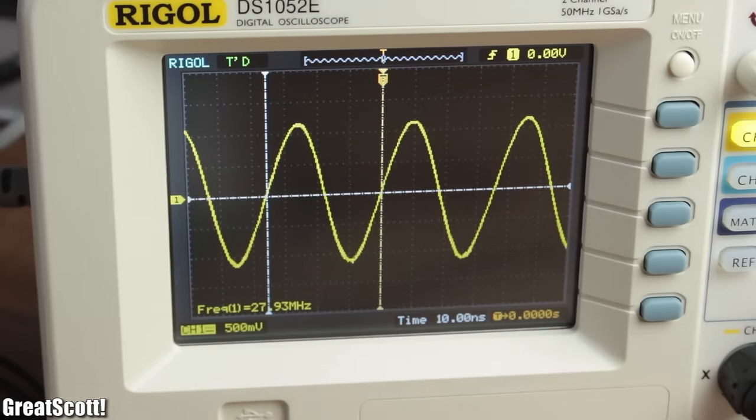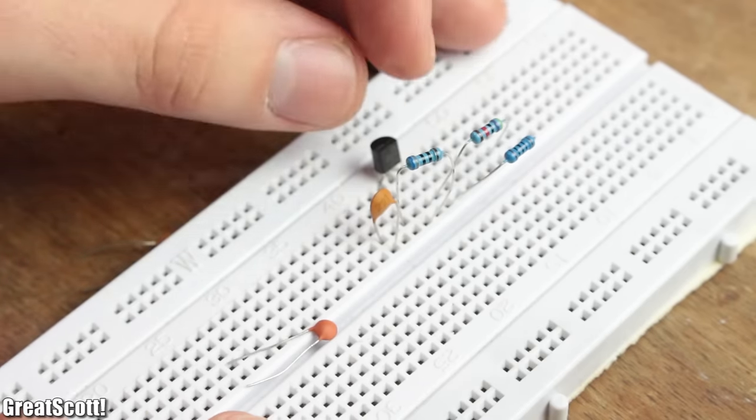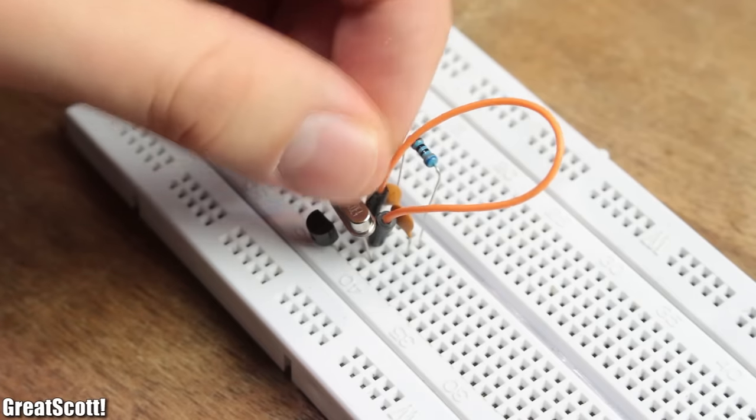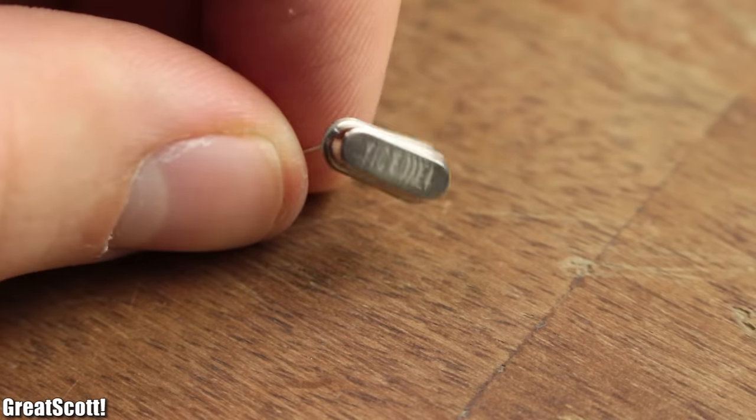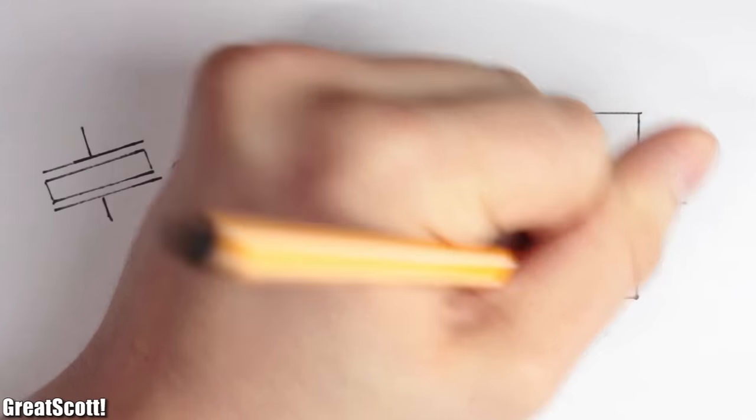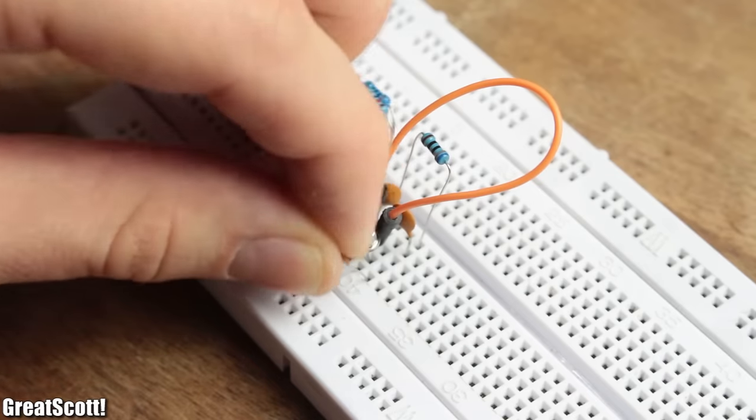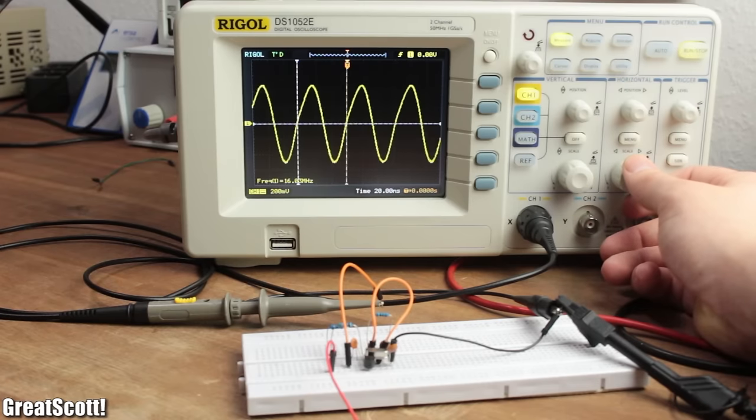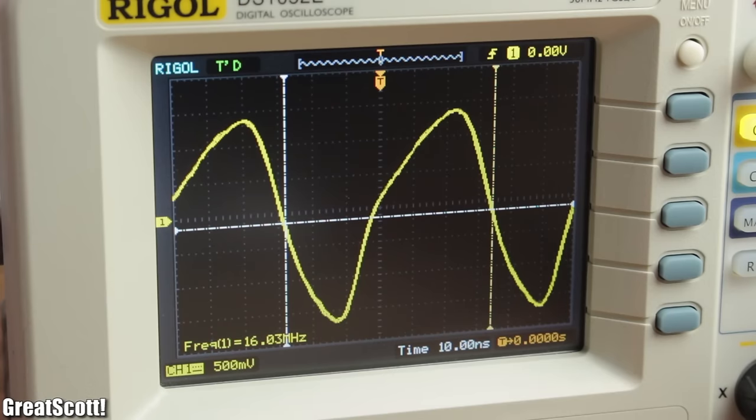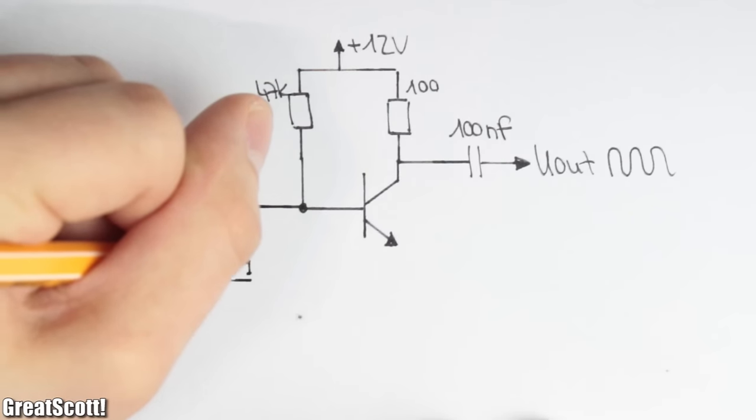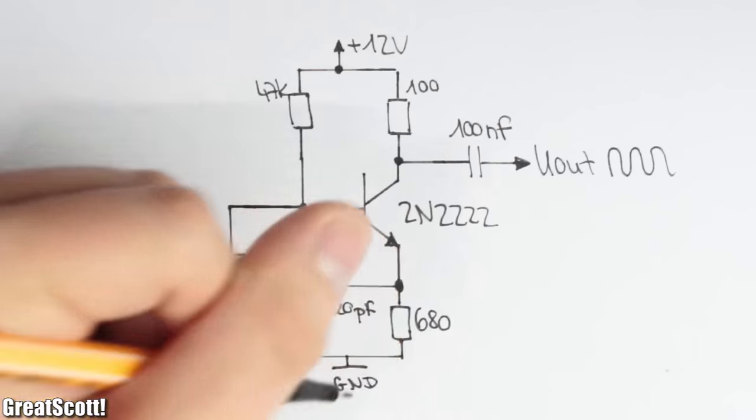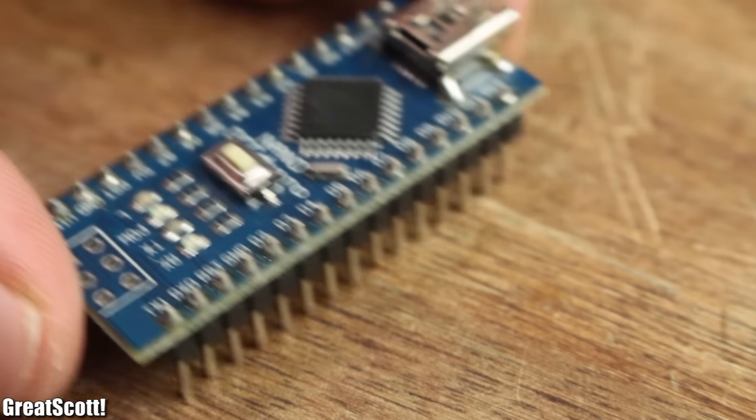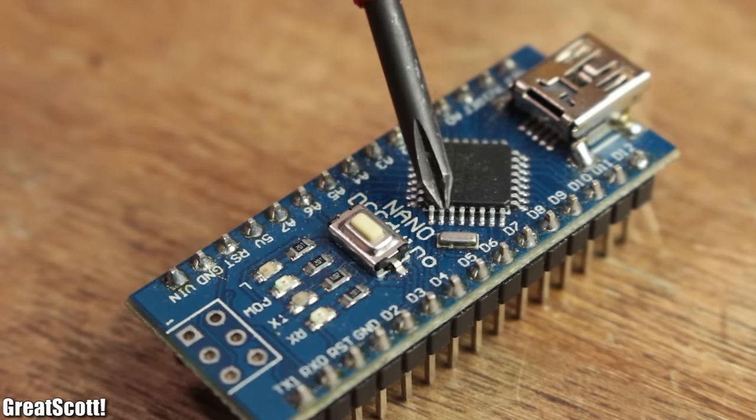But if we need even more stable frequencies, we can also use a crystal oscillator. It acts just like an LC resonator but also uses the mechanical vibrations of a piezo crystal and creates, in this case, a stable 16 megahertz signal. The necessary amplifier circuit is very similar to the one before, and you often see such crystals next to a microcontroller to set its processing speed.